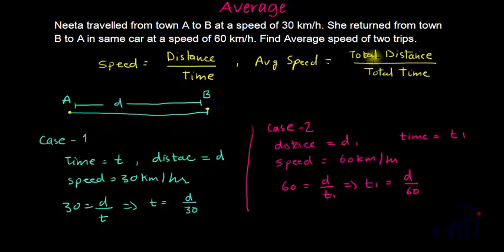And we know average speed is total distance divided by total time. So total distance in this round trip is D while going and D while coming back. So total distance is 2D and total time taken will be the sum of these two times because this is the time she is taking while going and this is the time she is taking while coming back.